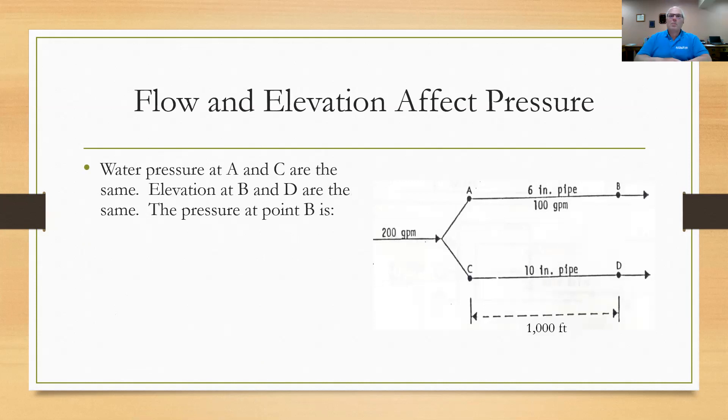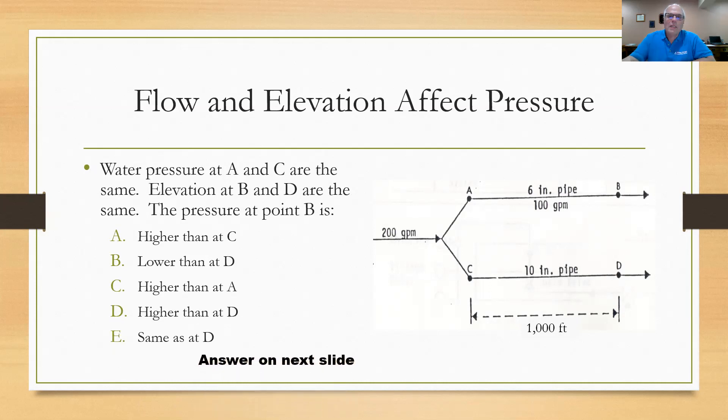All right, let's try the next one. This is the friction/elevation on how it affects pressure. I'll give you this drawing on the right where you have 200 gallons per minute coming into a system that branches off into a six inch pipe and a 10 inch pipe. I'll give you points A, B, C, and D. I'll show you that it's a thousand feet long. A to B is a six inch pipe and C to D is a 10 inch pipe. Now, if you got 200 gallons per minute coming in and they tell you that 100 gallons per minute is going through the six inch pipe, you can reason then that the other 100 gallons per minute has got to be going through the 10 inch pipe. So they give you these choices here. Higher than C, lower than D, higher than A, higher than D, same as D. So they want to know the pressure at point B, which is it in relation to point D. We'll look at the next slide and we'll go to the answer here.